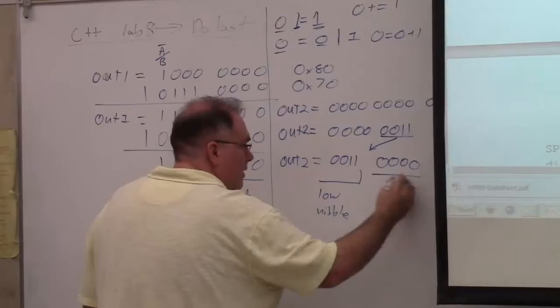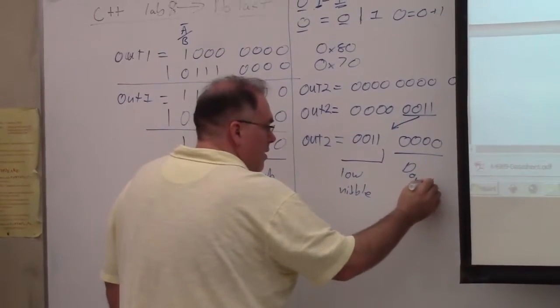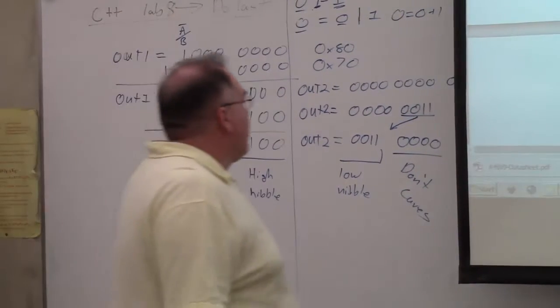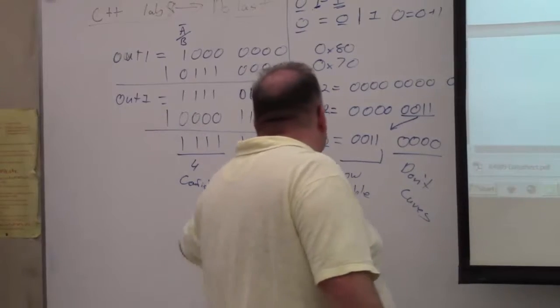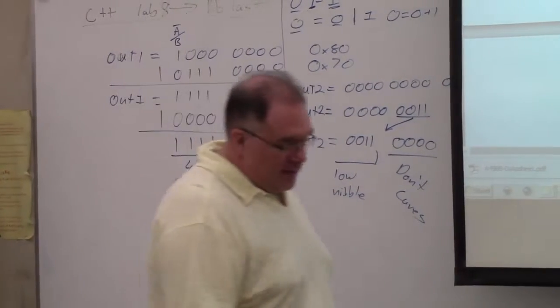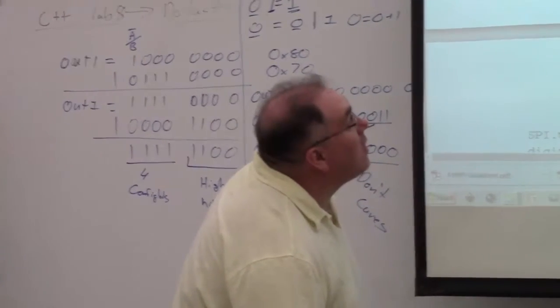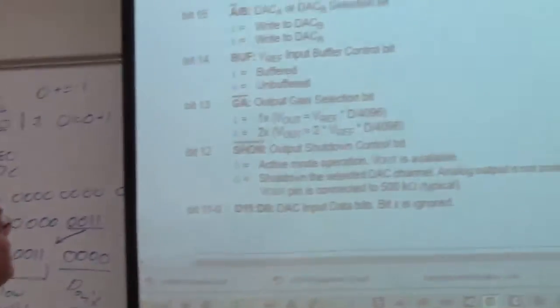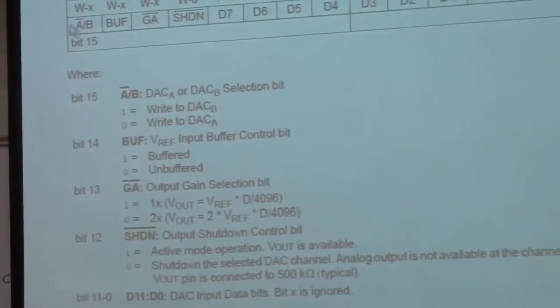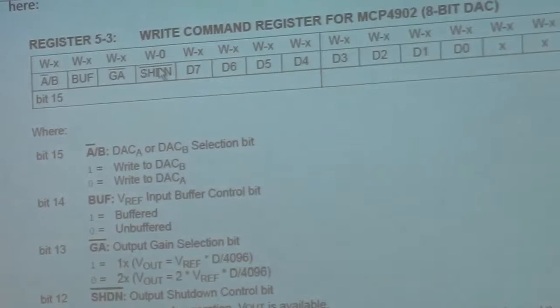And these are the don't cares. So output 1 and output 2 now have our 16 bits that fall into this register the way we want it to. So we have our four setup bits.